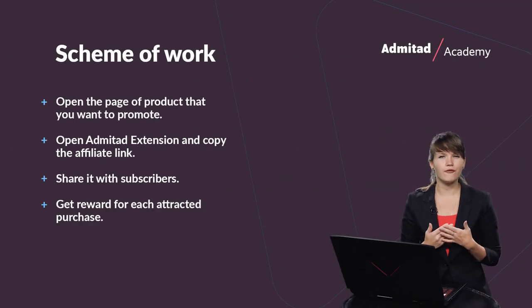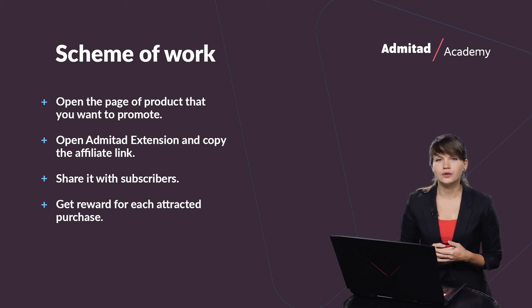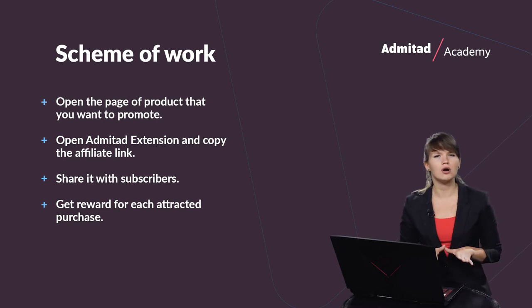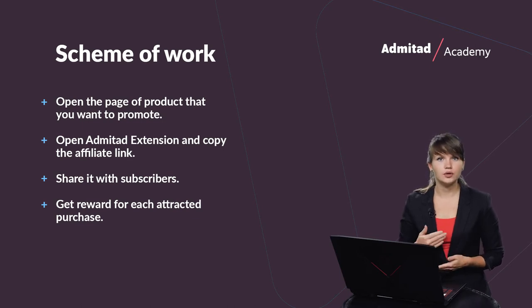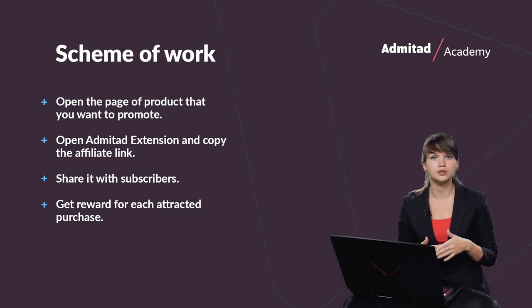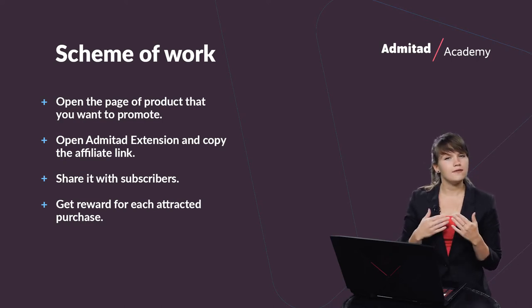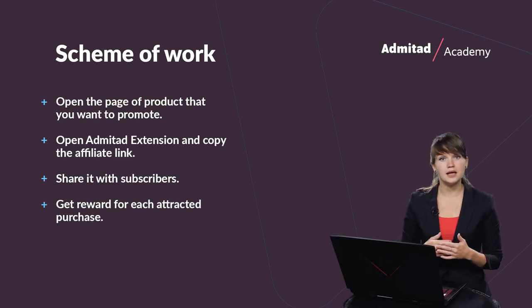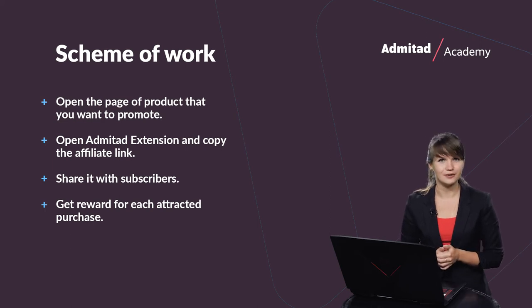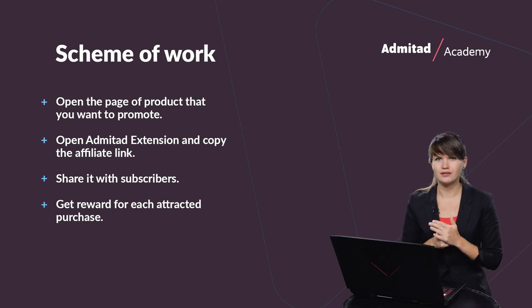Let's move on and check how it all works and what you need to do in order to earn money using Admitat extension. As you can see, there are just four basic steps. First, you need to open the page of the advertiser you like — for example, some online shop whose products you want to promote. Then find the product you want to promote, open Admitat extension and copy the affiliate link. After that, share this affiliate link with your subscribers, family or friends. And if anybody makes a purchase after clicking your affiliate link, you get the reward. It's pretty simple — just four steps.